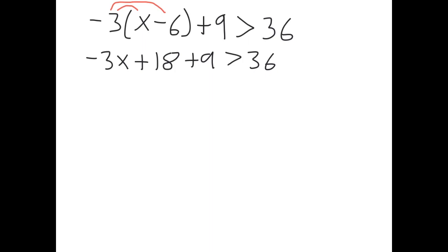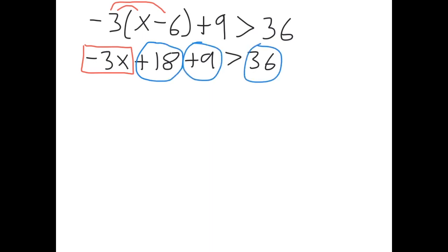Now we combine like terms. Put variables in a box, regular numbers in circles. On the left side, negative three x drops down, and eighteen plus nine is twenty-seven. So we have negative three x plus twenty-seven, and that is greater than thirty-six.